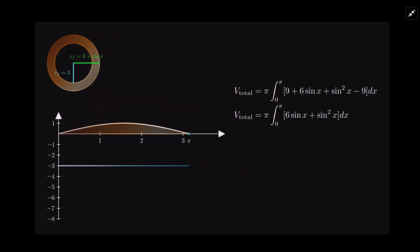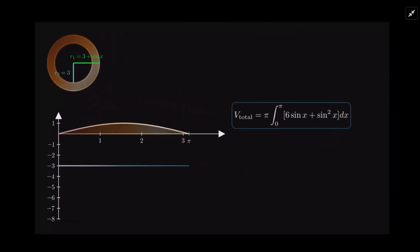So you look at each ring, get the outer radius and the inner radius, and there we go. I hope that was helpful.